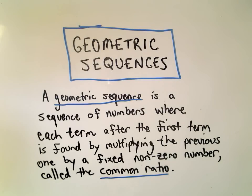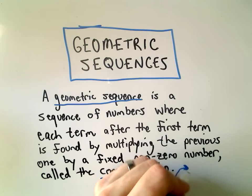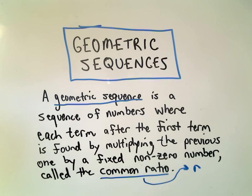In this video I want to give a quick introduction to what are called geometric sequences. The definition of a geometric sequence is simply a sequence of numbers where each term after the first is found by multiplying the previous one by a fixed non-zero number that we call the common ratio. Typically this common ratio we abbreviate as R for ratio.